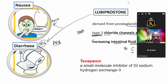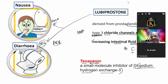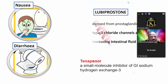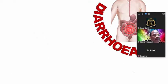One newer drug is tenapanor, a small molecule inhibitor of gastrointestinal sodium-hydrogen exchanger 3 (NHE3). It is currently under clinical trial.